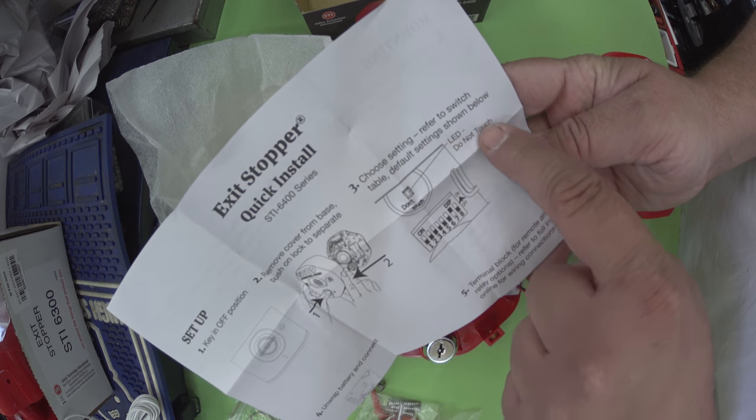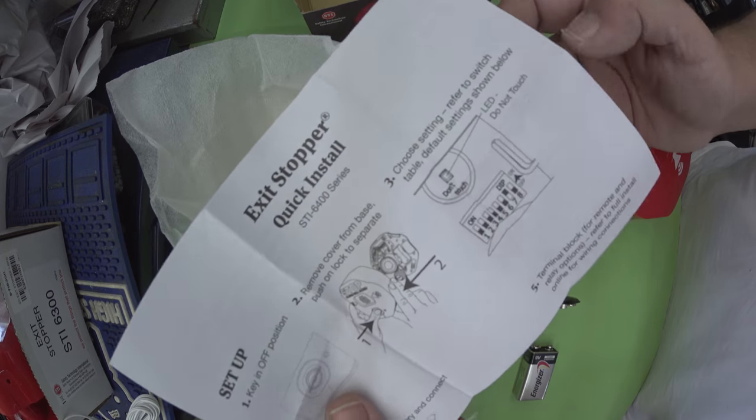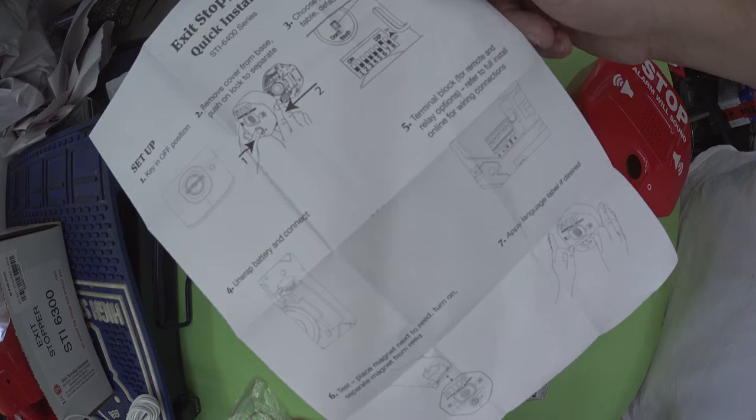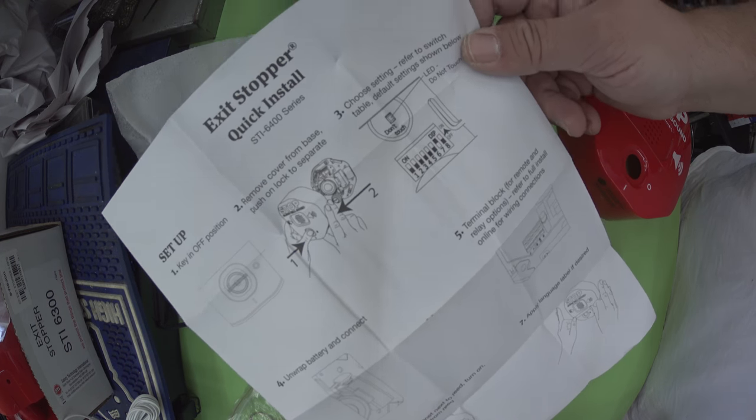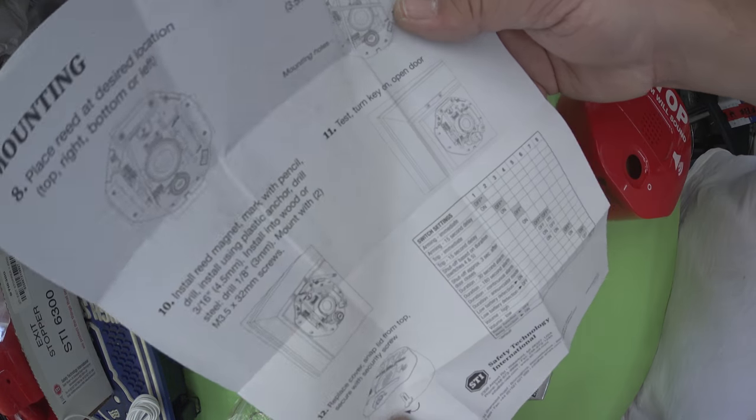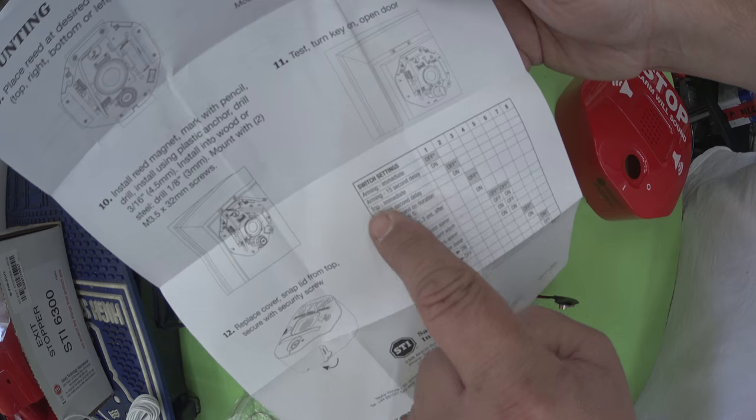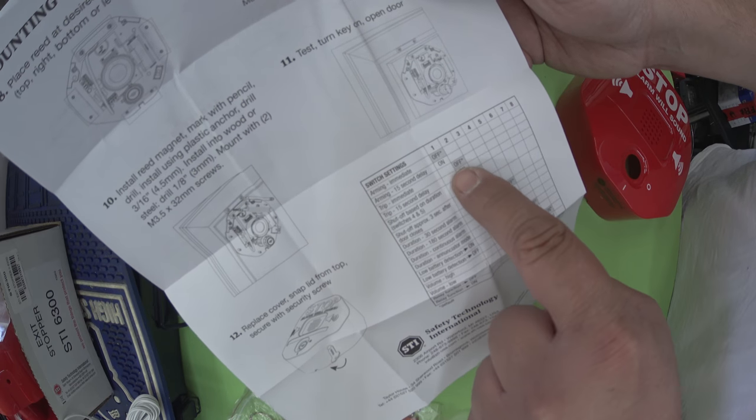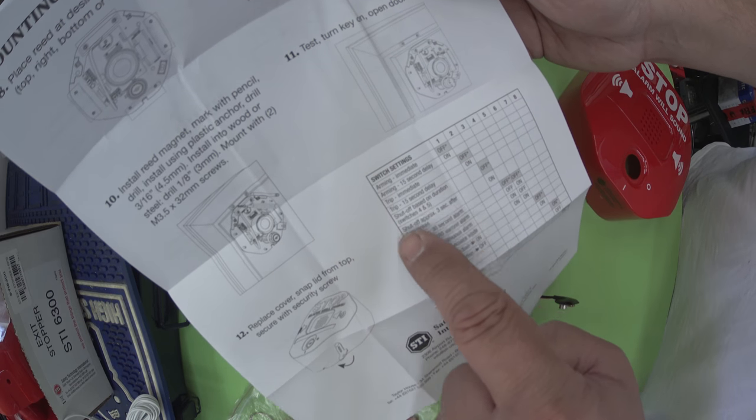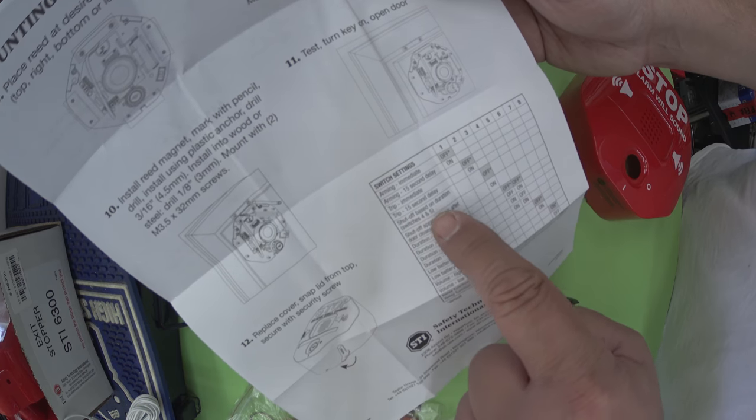Choose your setting, refer to the switches table below. Do not touch. So, it doesn't really, so far, tell us. Oh, okay, switch settings. Arming, immediate, arming after 15 seconds, trip, imminent, shut, shut off, base. Okay, so you can basically set it with these ones here.